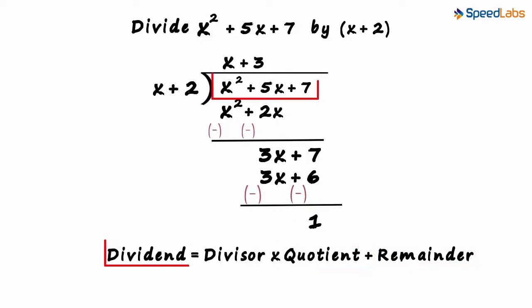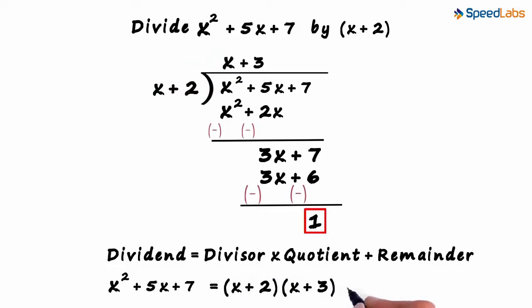The dividend is x squared plus 5x plus 7. The divisor is x plus 2 and the quotient is x plus 3. The dividend can then be written as x plus 2 multiplied by x plus 3 plus 1.